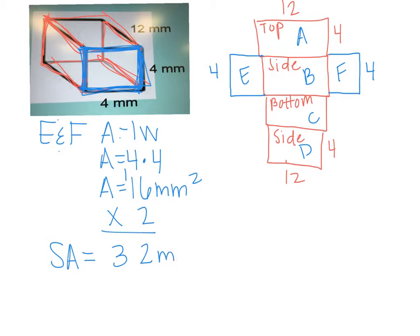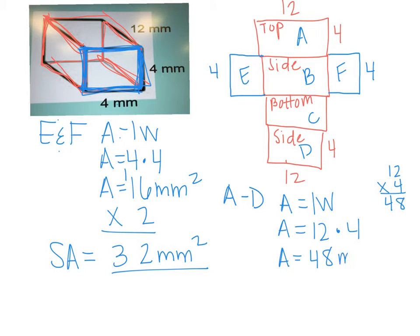Now we can start with A through D. They are rectangles, so we can use length times width again. And their dimensions are 12 by 4. So let's come over to the side. What's 4 times 2? 8. 4 times 1? 4.